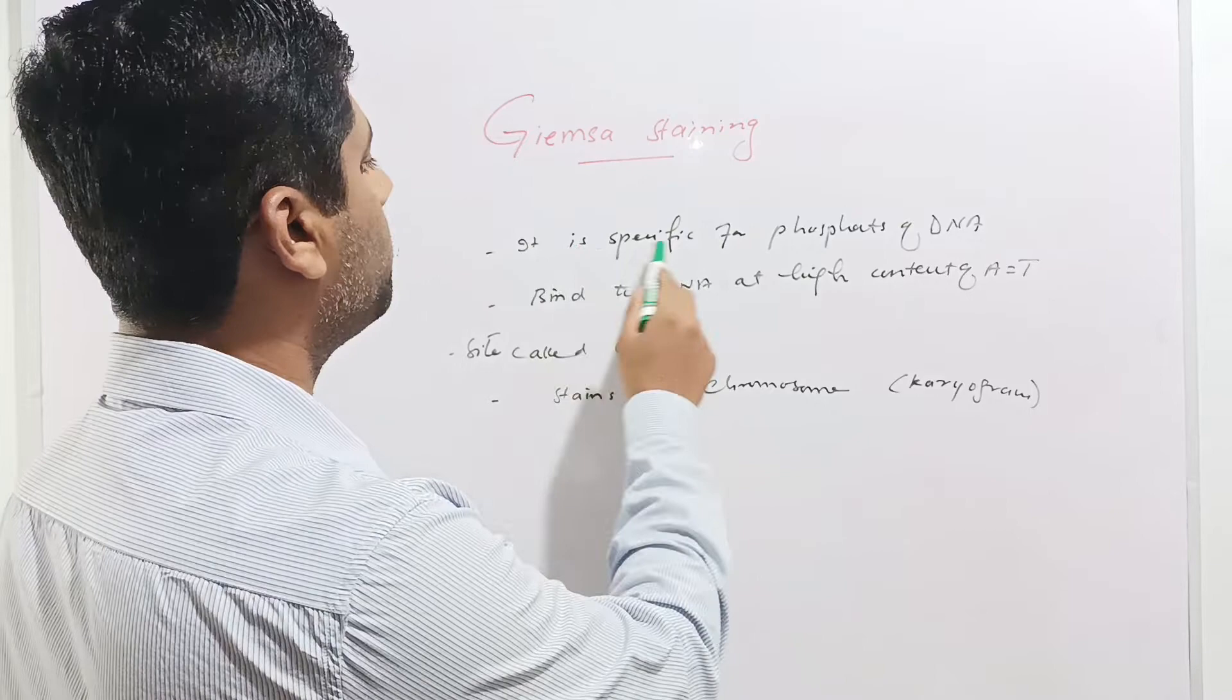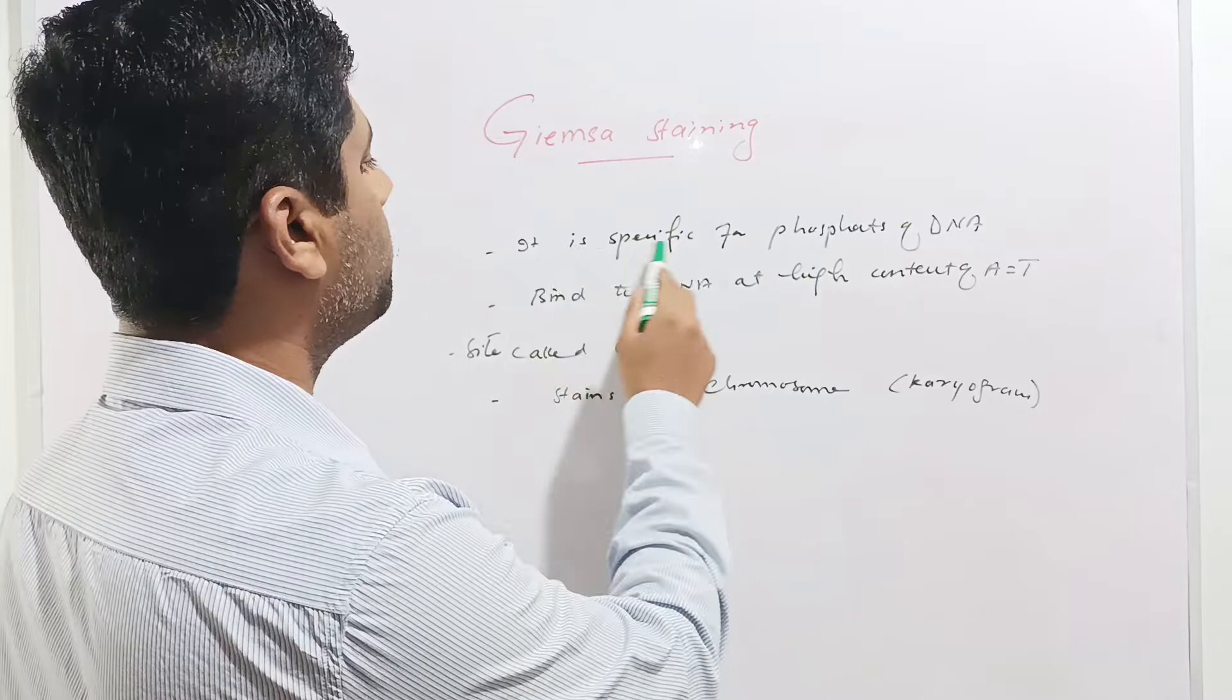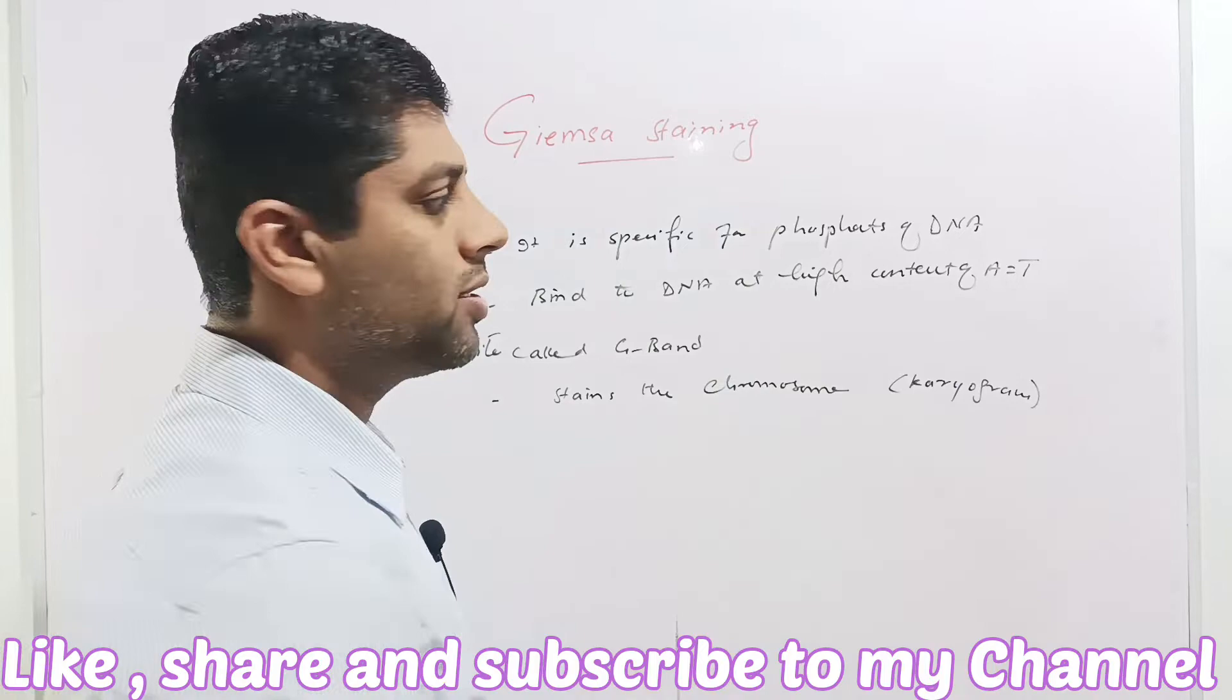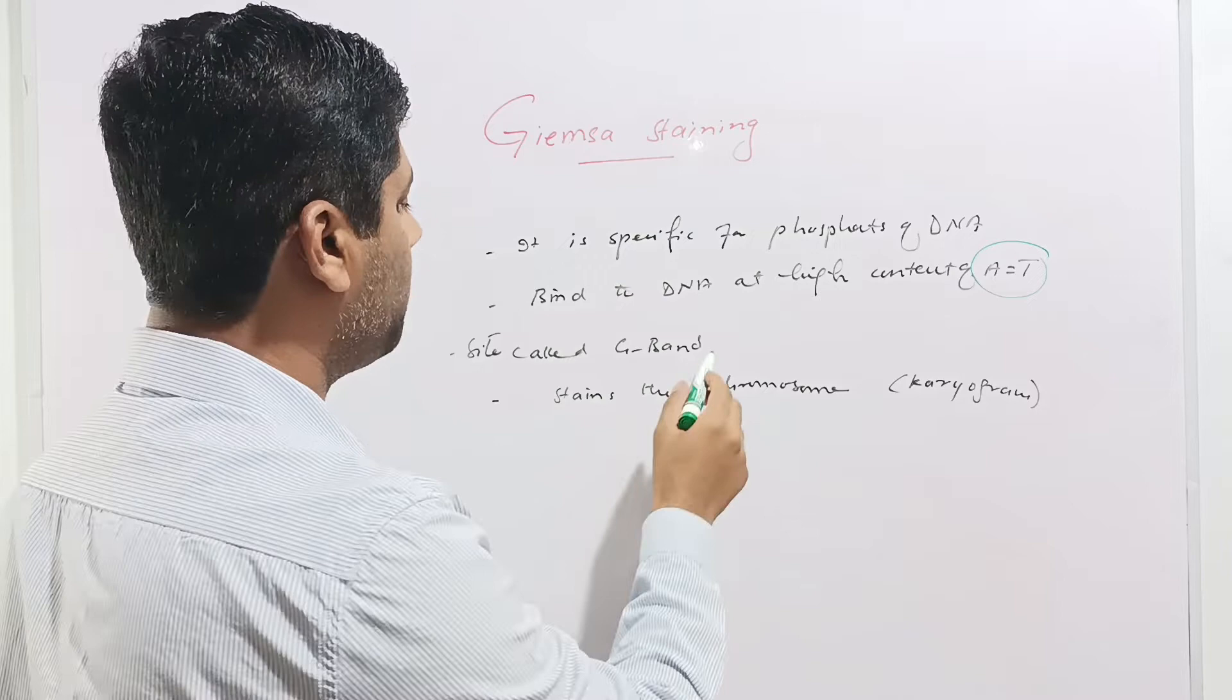The mechanism of action of Giemsa stain is that it's a specific stain for the phosphates of DNA. Giemsa stain is basically a nuclear stain and it binds to the phosphate groups of the DNA. More specifically, it binds to DNA at high content of adenine and thymine. This site is termed as G band or Giemsa band.